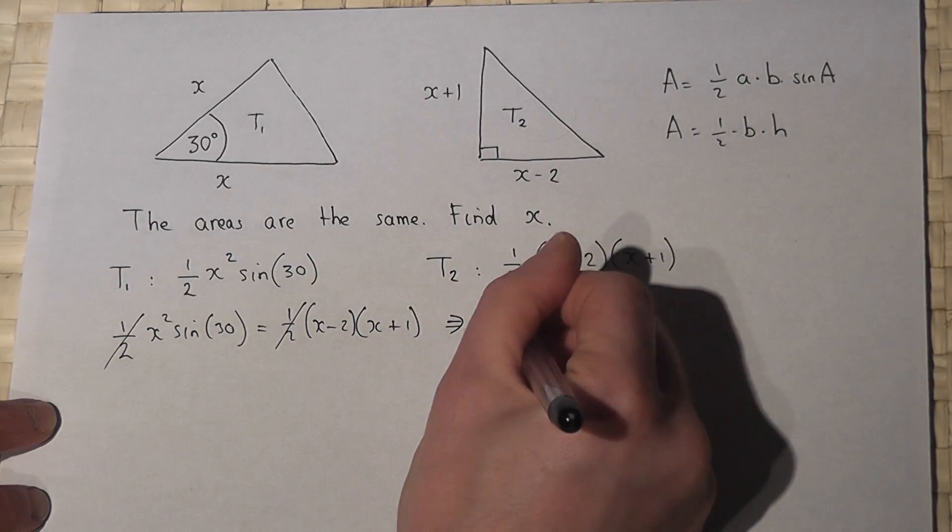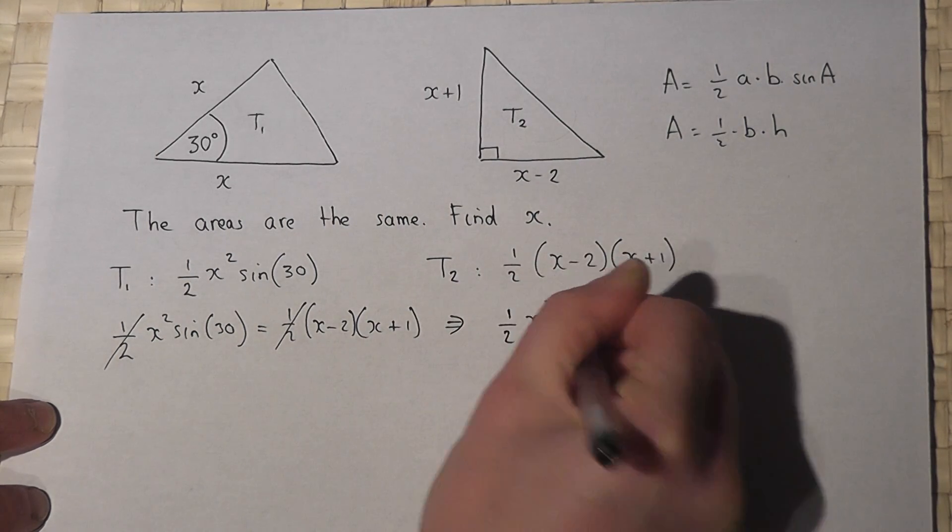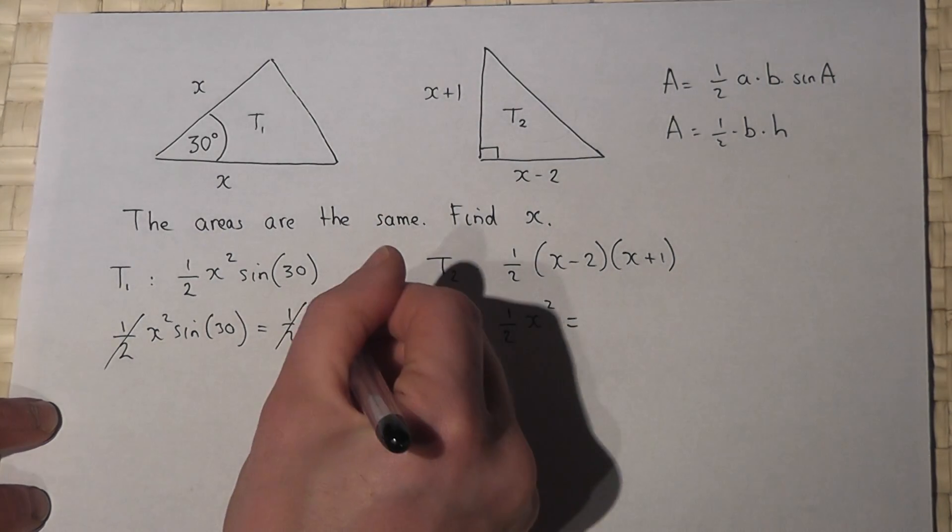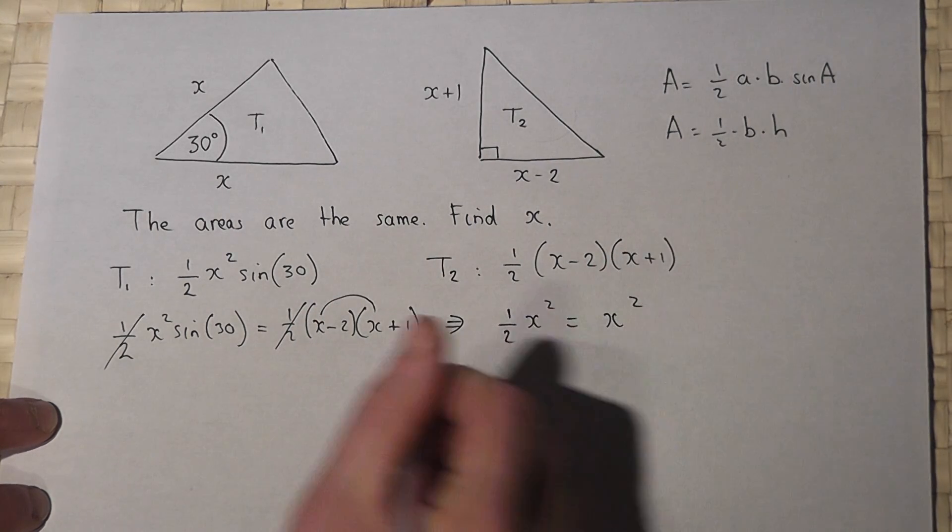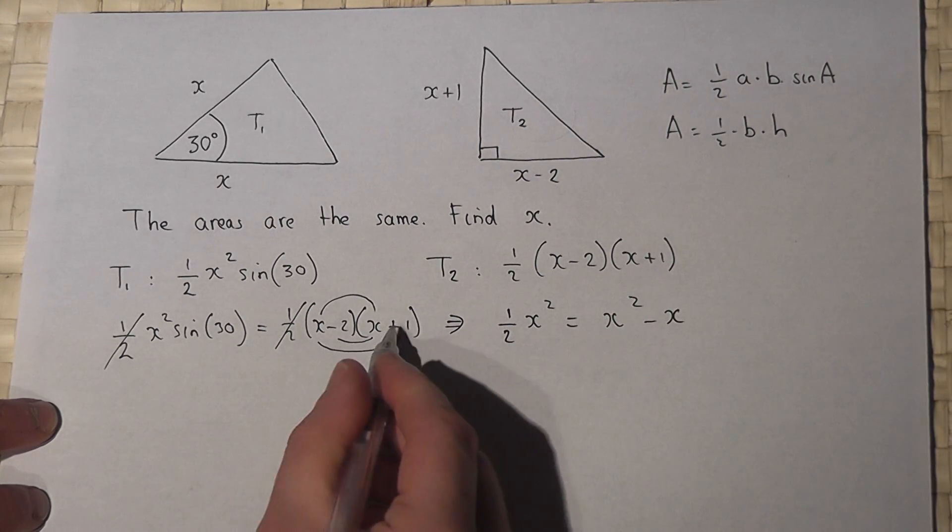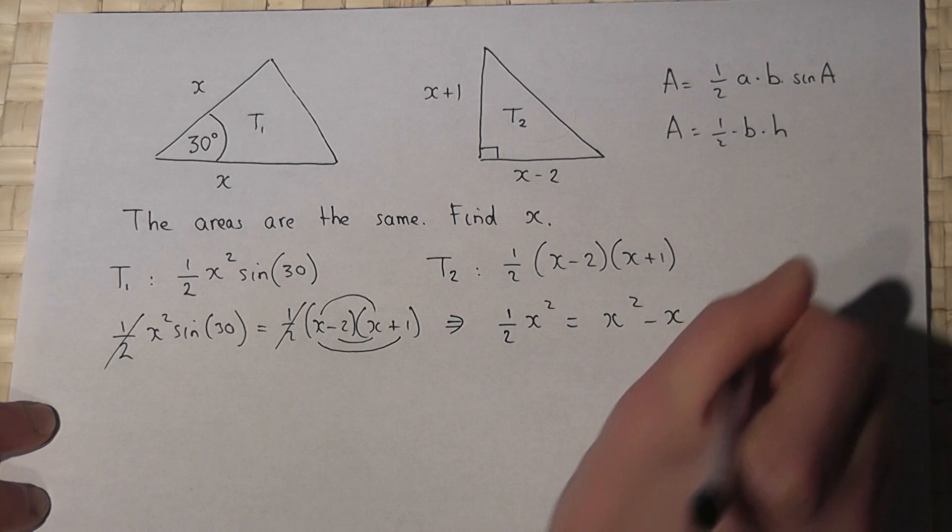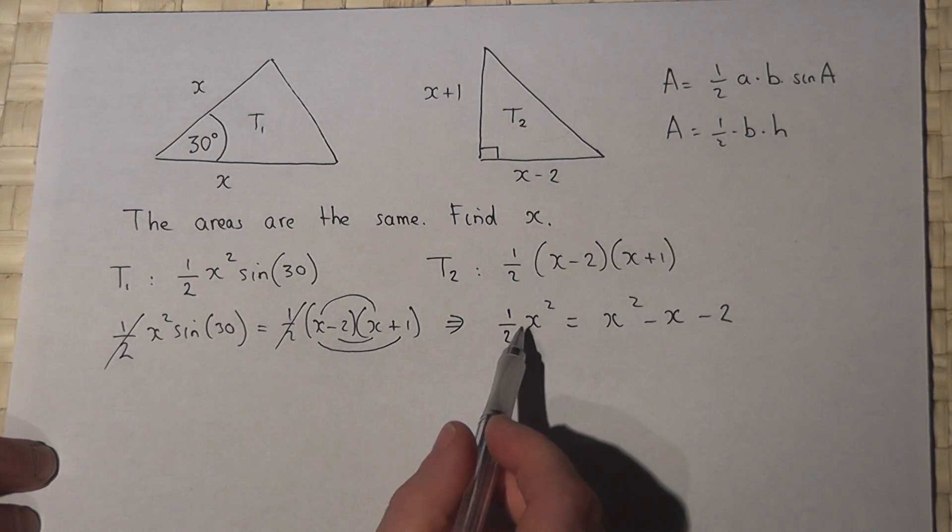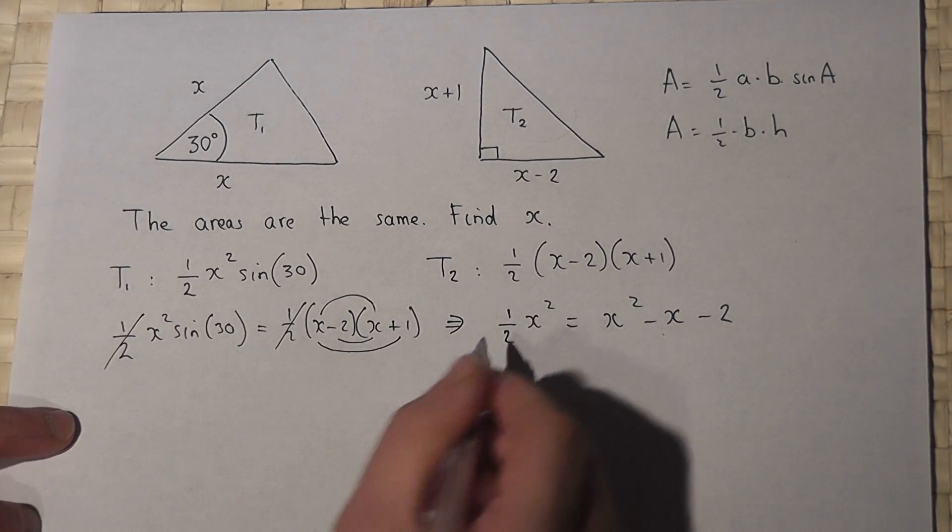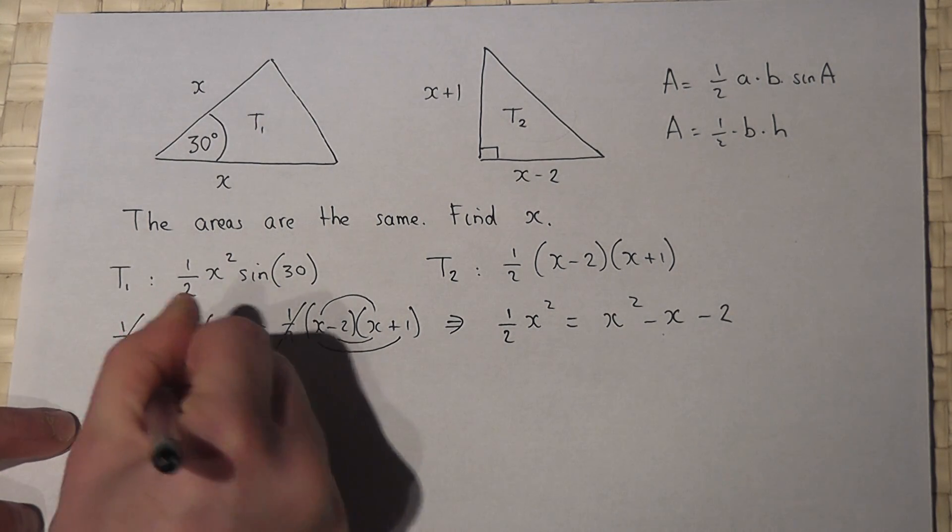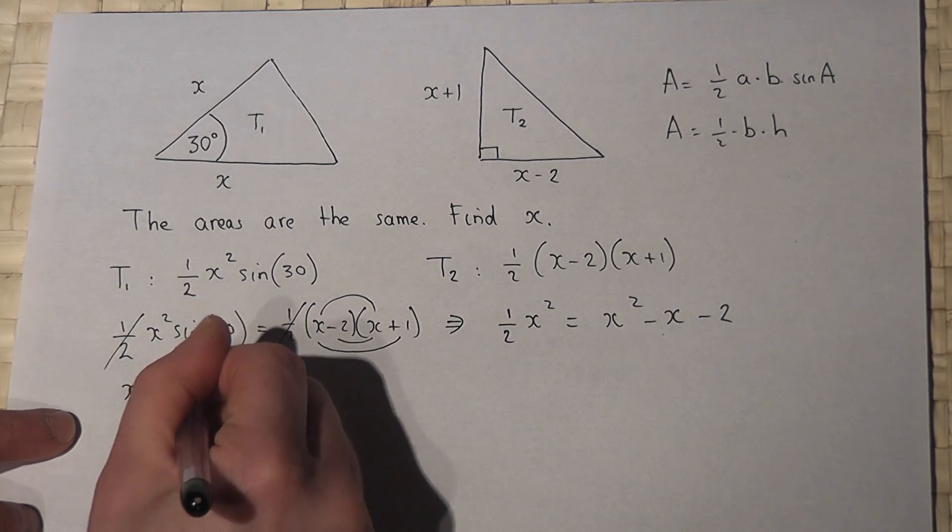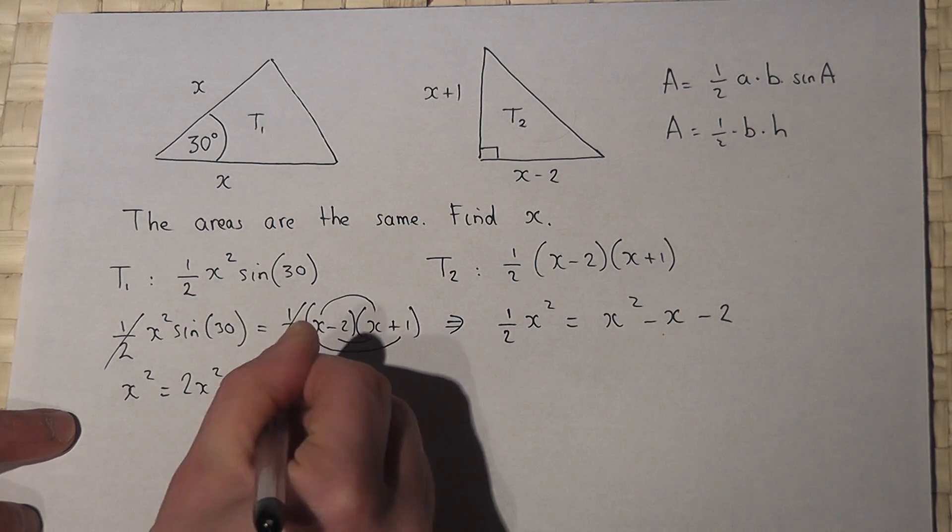I can then work out sine 30 which is a half. So therefore a half x squared equals this expression here which I'll expand. So x squared, x minus 2x plus x is minus x, minus 2 times 1 is minus 2. So the equation is a half x squared equals x squared minus x minus 2. Then I multiply by 2 so the half cancels off. So I get x squared equals 2x squared minus 2x minus 4.